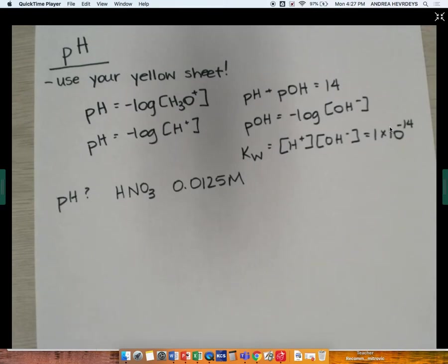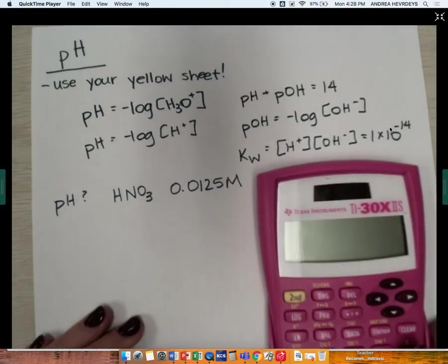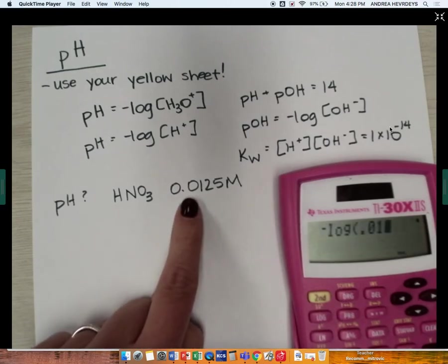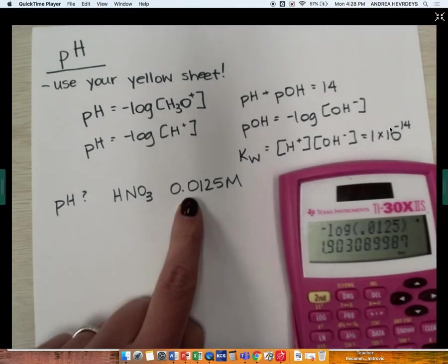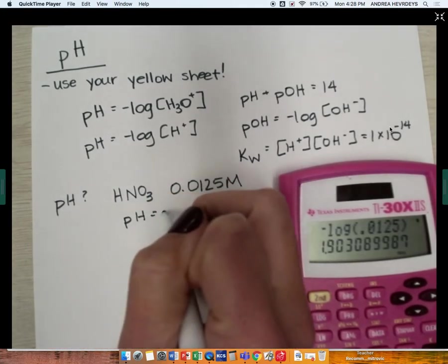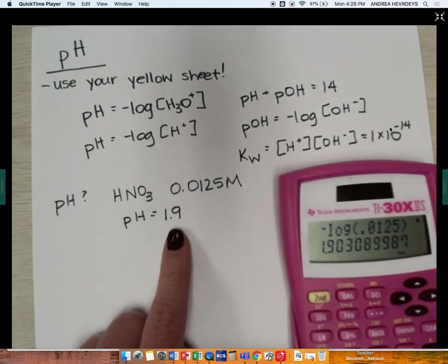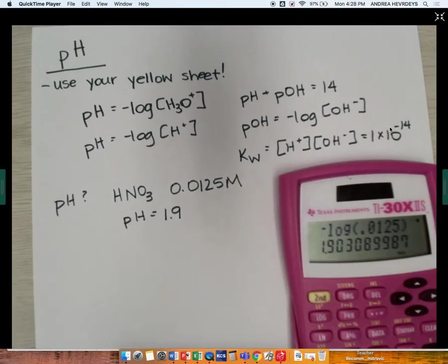And all you have to do is plug it into your calculator. So the negative log of that number. So I'm going to turn my calculator on. That's exciting. I'm going to type in negative sign. I'm going to hit the word log, and then I'm going to type in my concentration. And I get that this has a pH of 1.9. That's a strong acid. But I can ask you other questions.